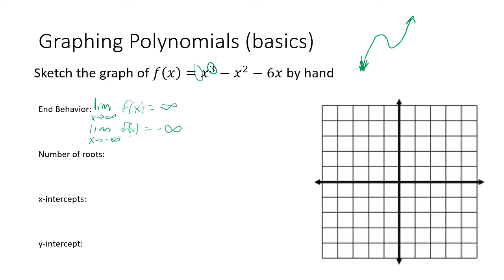We also know from the fundamental theorem of algebra that there are three roots for this polynomial. Right now, we don't really know anything else. It's pretty easy to find the y-intercept by plugging in zero for x, but this form — x³ - x² - 6x — is not particularly useful to us when it comes to graphing. It helps with end behavior, and that's about it. The whole point of factoring polynomials was to get it into factored form, which is very useful for graphing.